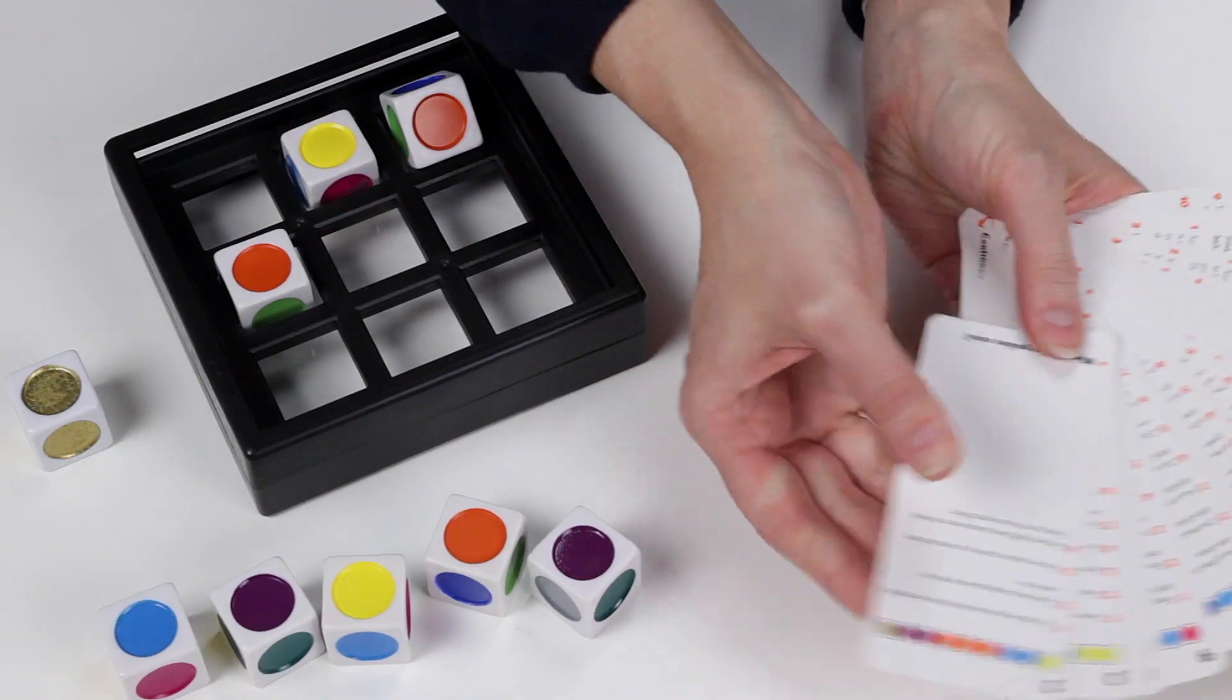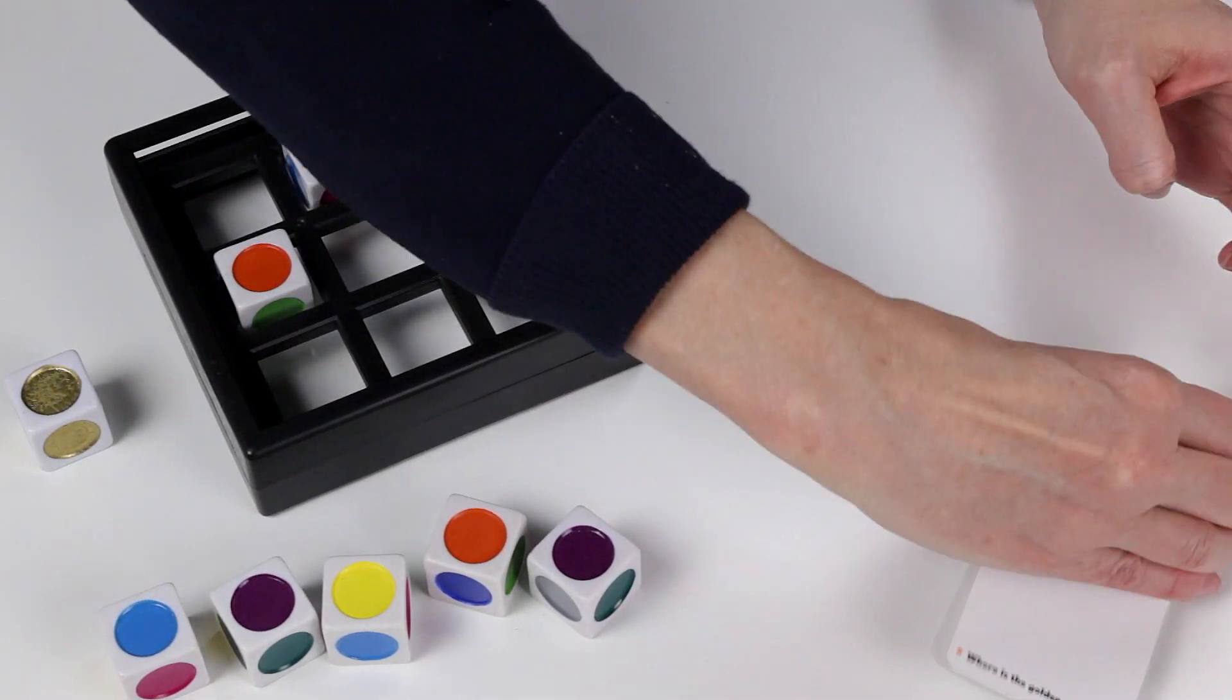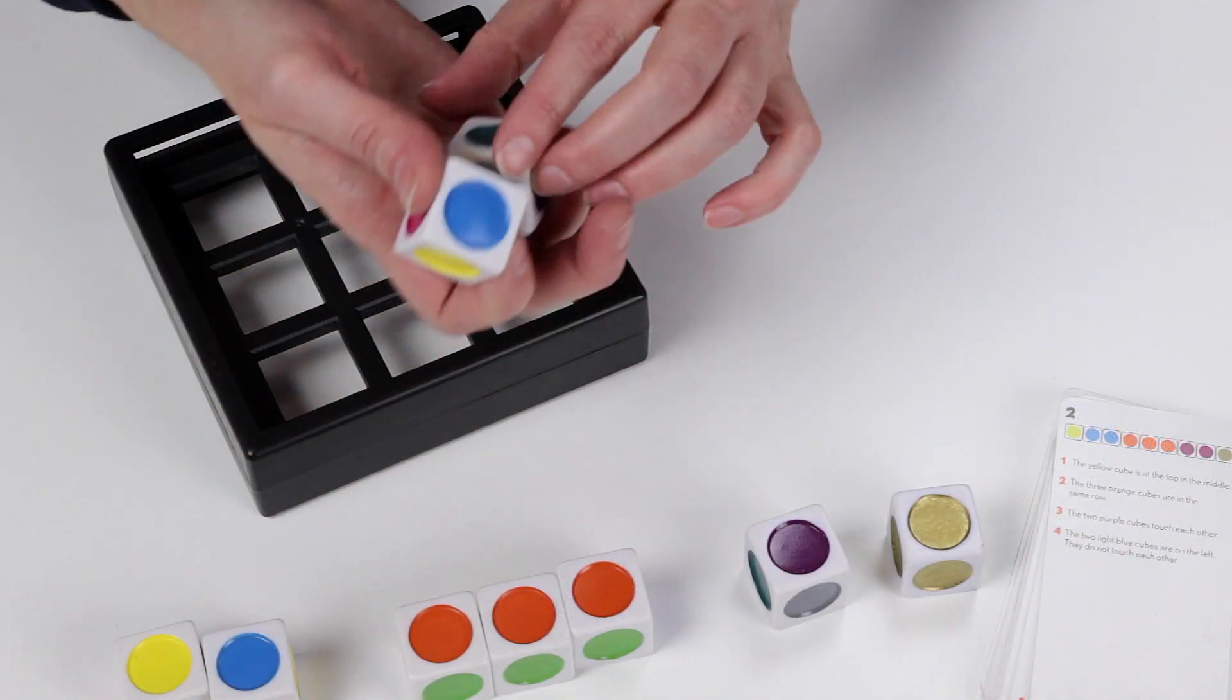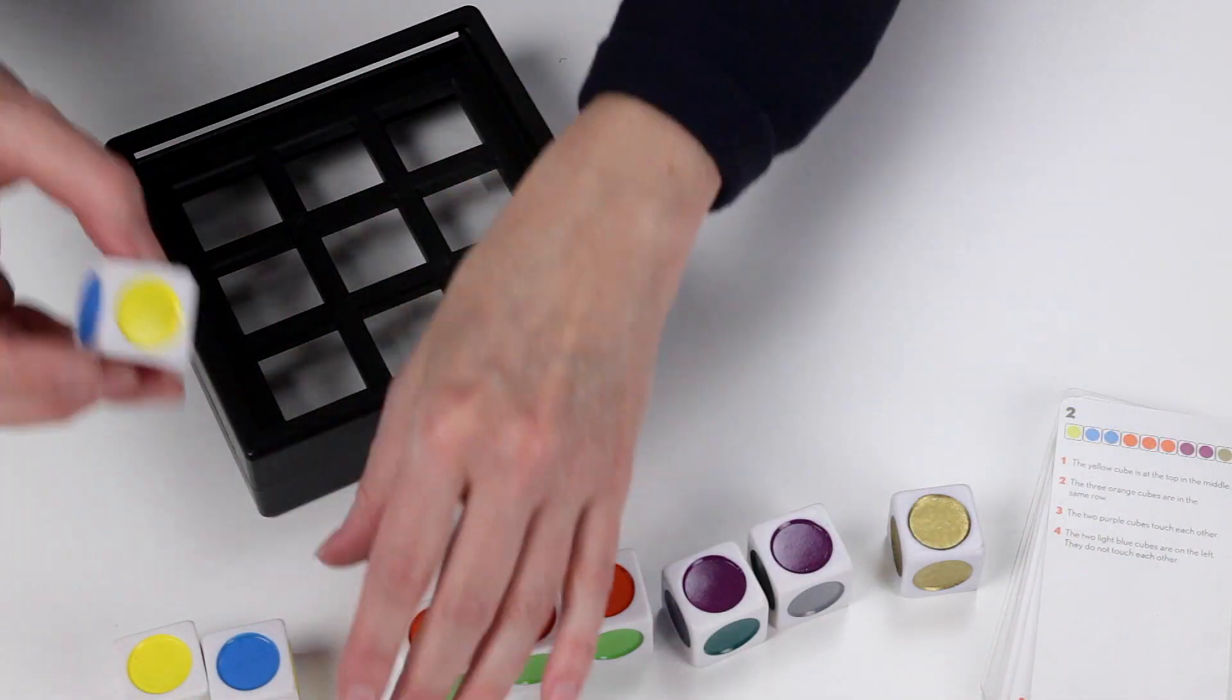Pick one of the 36 challenge cards and set up the dots. Then follow the clues and use your deductive reasoning to find where the golden dot goes.